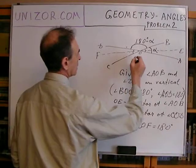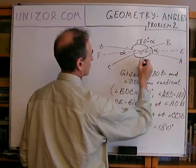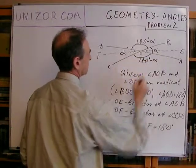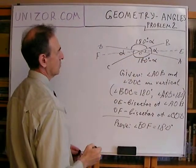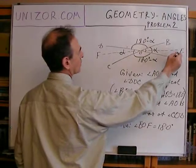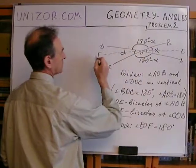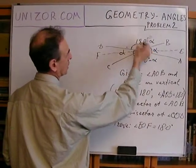Same thing is here. This is also alpha and this is also 180 degrees minus alpha. So, let's see what will be if we will start moving from OE to OF.